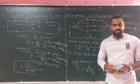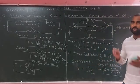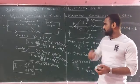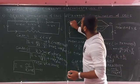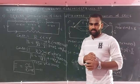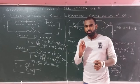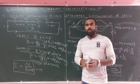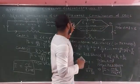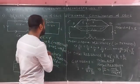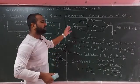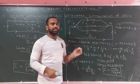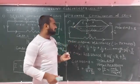Now, the parallel combination of cells. When you have cells in parallel connection, consider M number of cells connected in parallel. Each cell has EMF E and internal resistance R — these are identical cells, meaning every cell has the same EMF E and the same internal resistance R.